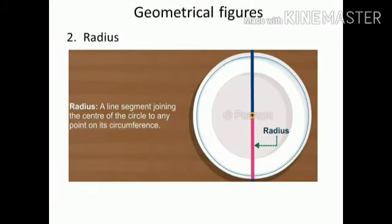Next term is radius. A line segment that joins from the center of the circle to any point on the circle is called the radius of the circle. We can draw many radii in a circle. Radius is singular and in plural we say radii.